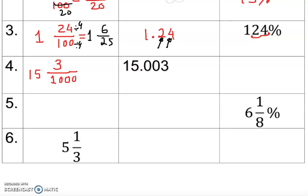Now to get the percentage from 15.003, instead of moving the decimal to the left we move it to the right. We move it twice, so we get 1500.3 percent.